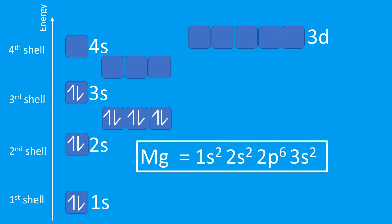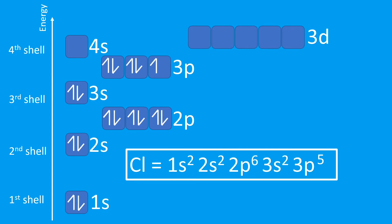...sodium loses its highest energy level electrons — those 3s electrons — so they've been donated. The electron configuration becomes 1s² 2s² 2p⁶, and sodium becomes a +1 cation.